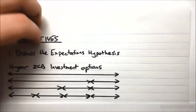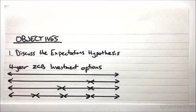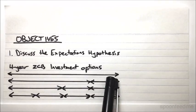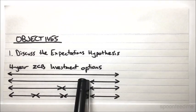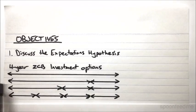First off, let's just have a look at these possible investment options using zero coupon bonds to invest over a four-year period. So you've got getting a four-year zero coupon bond, getting a three-year zero coupon bond and then investing the proceeds into a one-year zero coupon bond, so on and so forth.